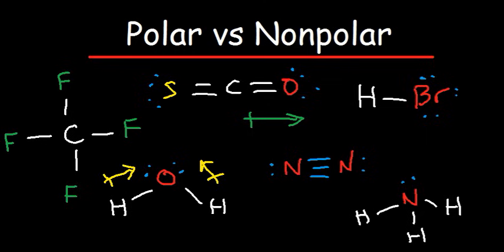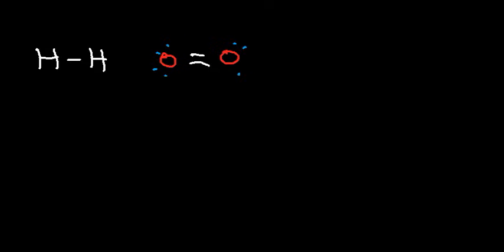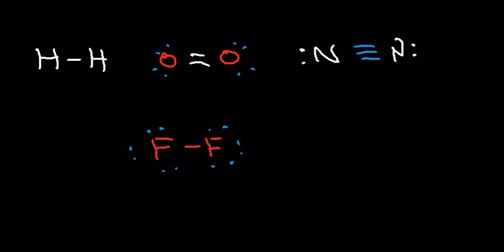In this video we are going to focus on how to quickly tell if a compound or molecule is polar or nonpolar. Let's start with diatomic molecules. Diatomic molecules like hydrogen, oxygen, nitrogen gas — O2, N2, Cl2, Br2, F2 — all of these diatomic molecules are nonpolar.